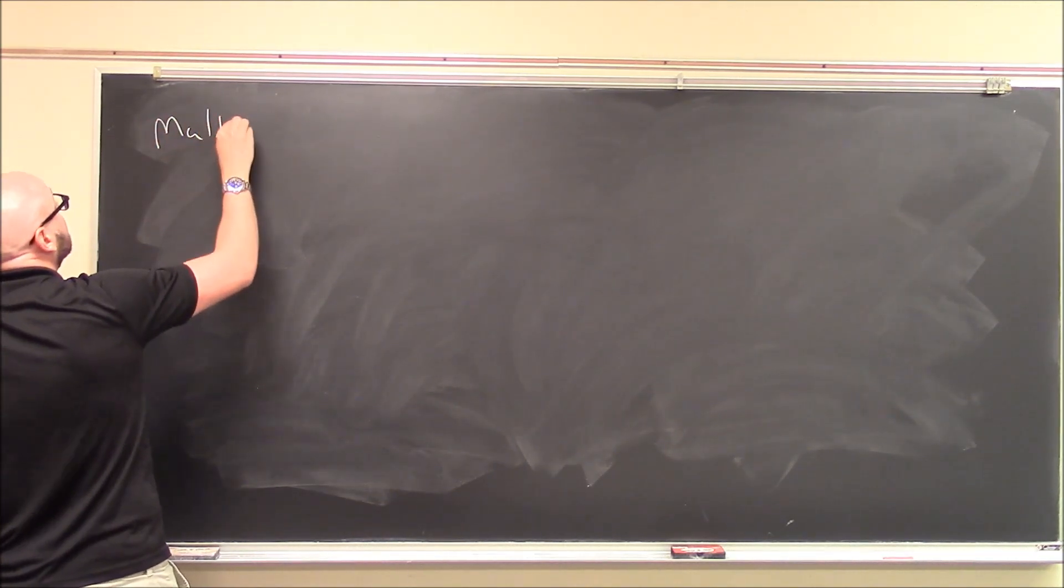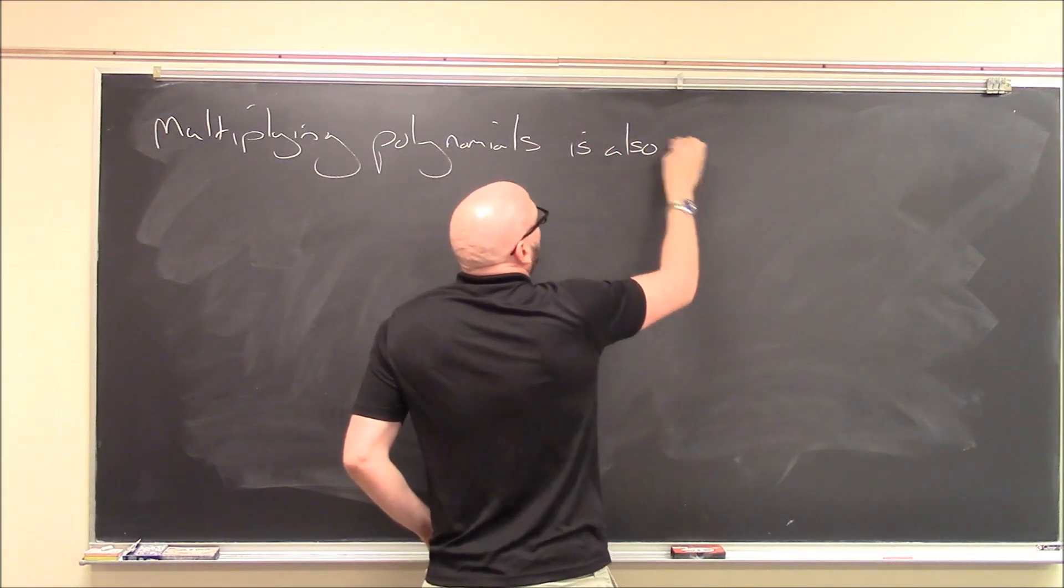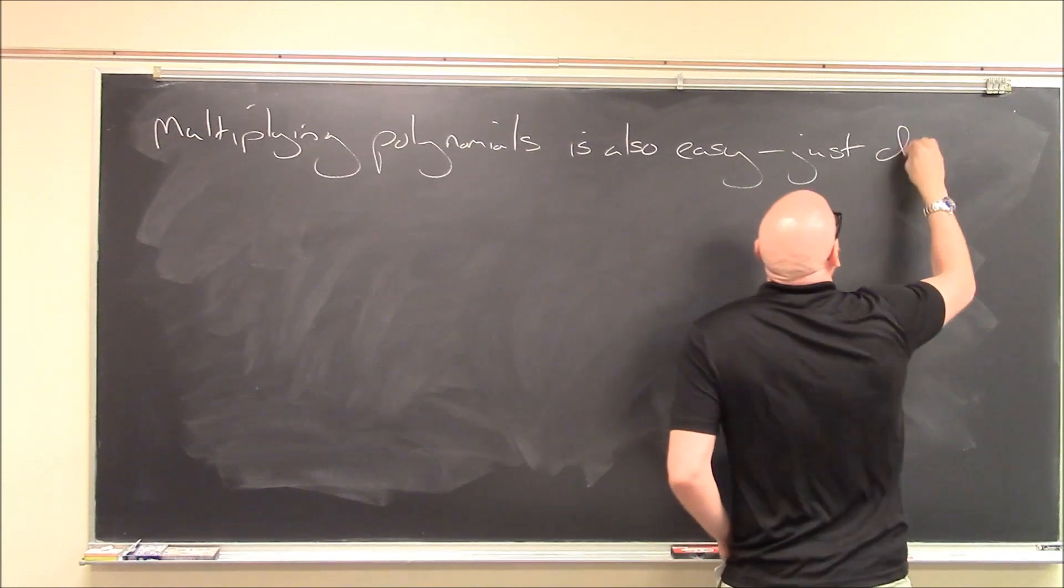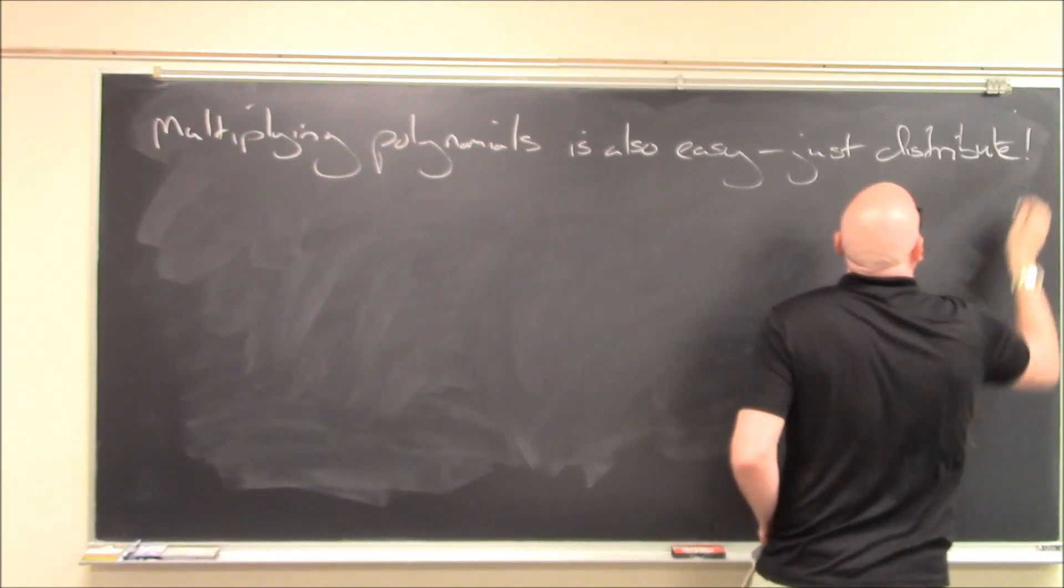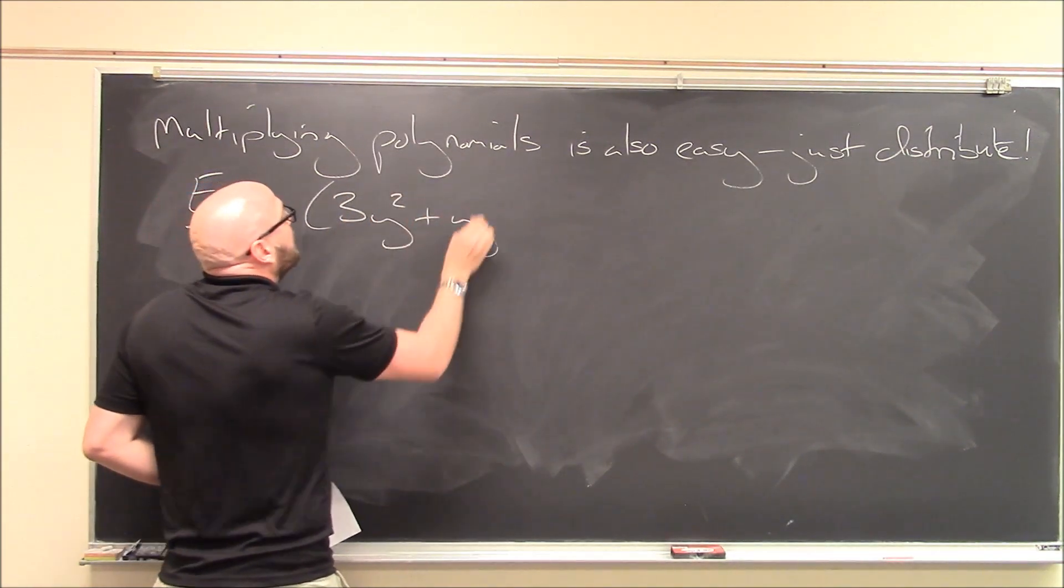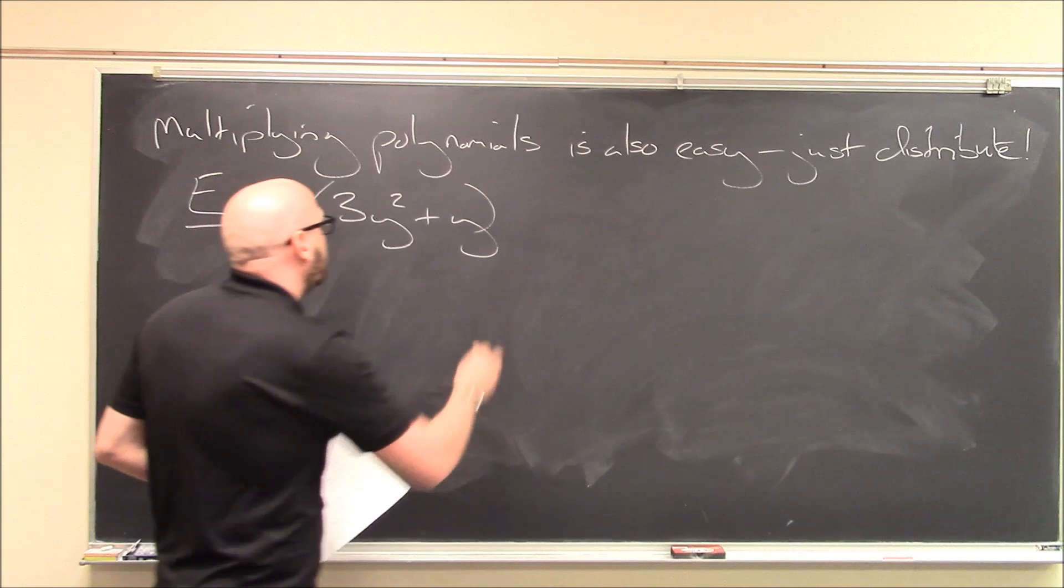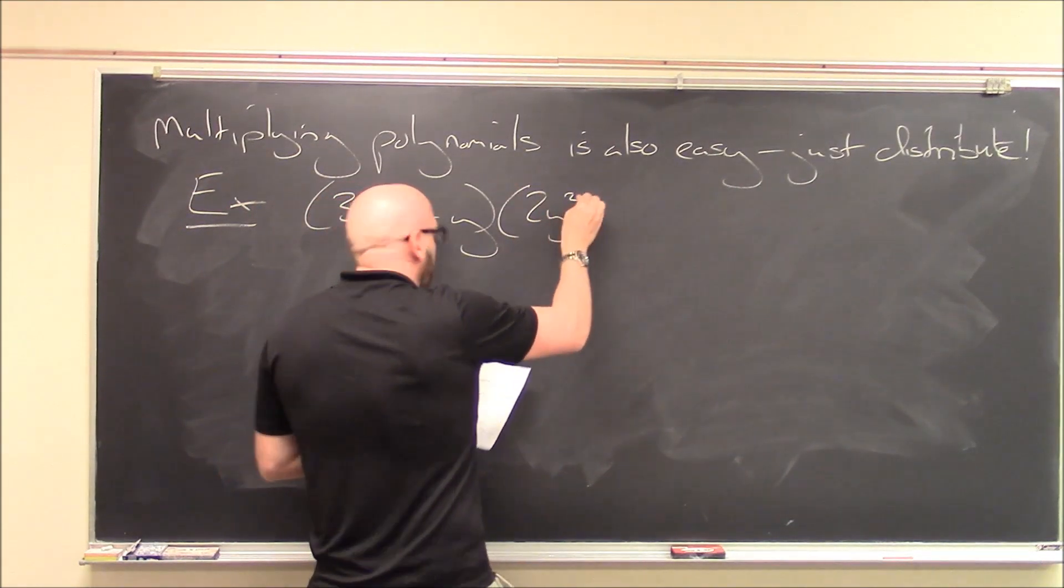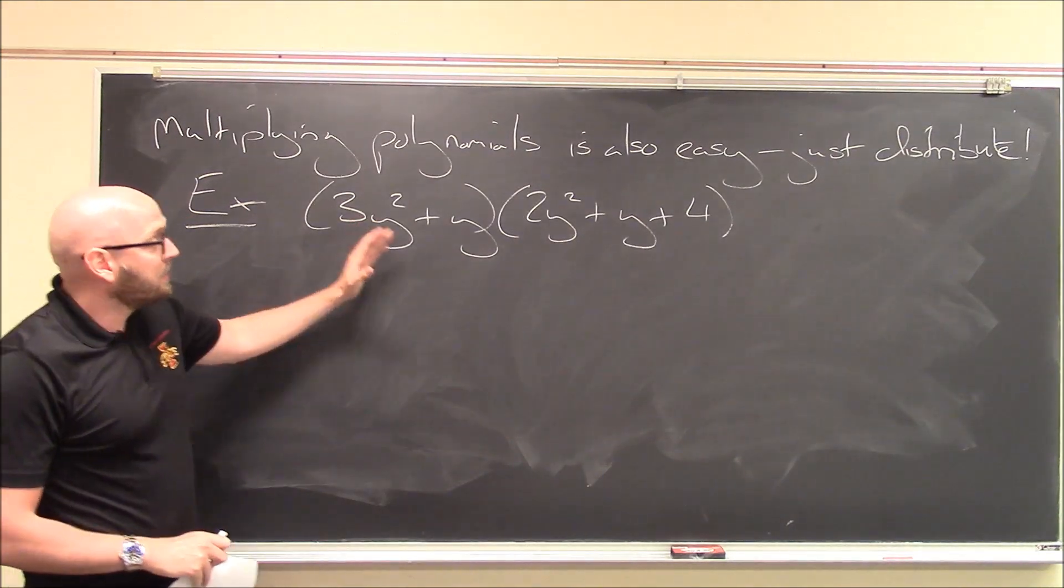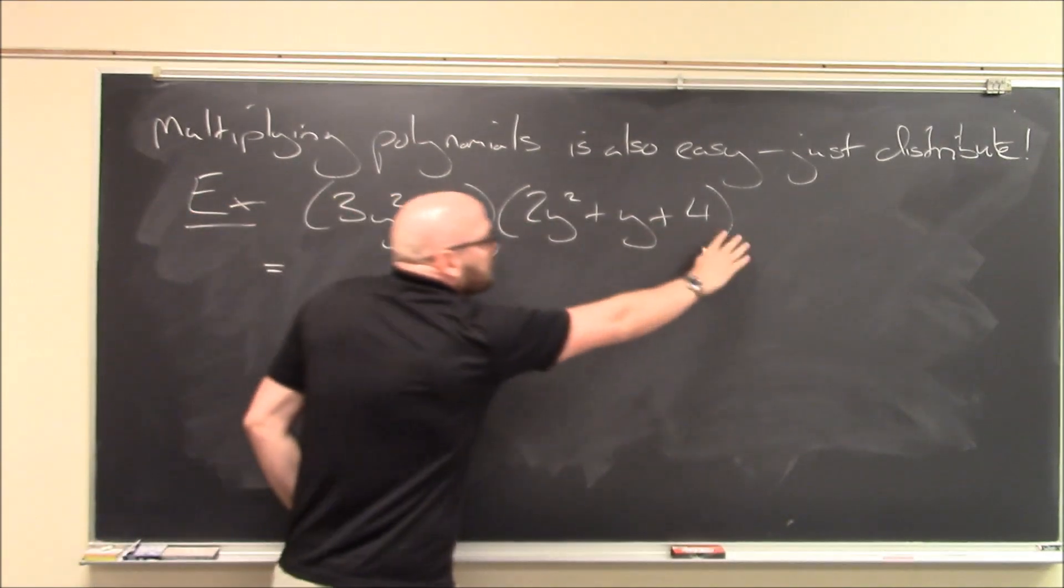All right, so multiplying polynomials is also, I'll say easy, not quite as easy as adding them, but it's still easy. What do you do? Well, you distribute them. So, for example, something like this. Suppose I've got, here's my polynomial, 3y squared plus y. Not using x here. You can use any letter at all that you want for the variable, so I've gone with y just to change things up. So, 3y squared plus y times 2y squared plus y plus 4. All right, so two polynomials multiply together. So, how do you multiply them? Well, you distribute.